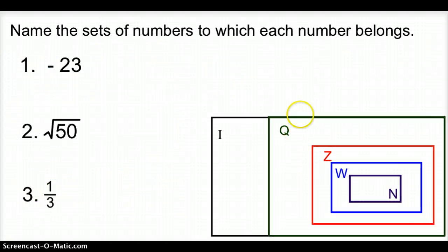Let's take a look now. Now name the set of numbers to which each number belongs. So we're starting with 1. Number 1 is negative 23. So negative 23 if you look back at your note sheet we know that negative 23 is an integer.